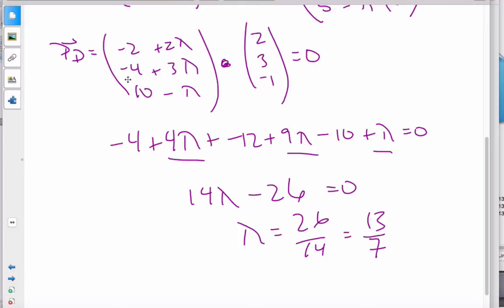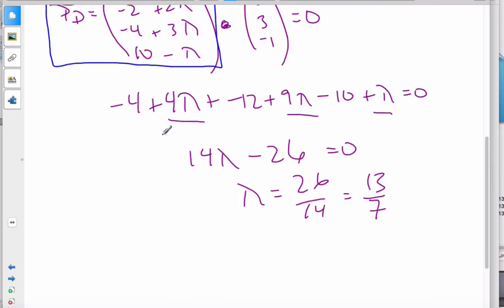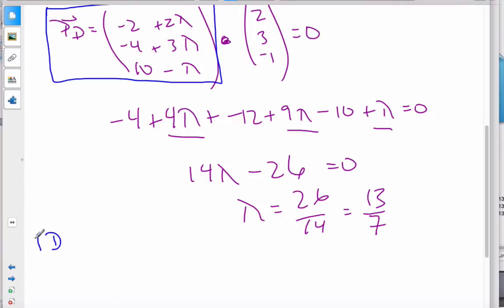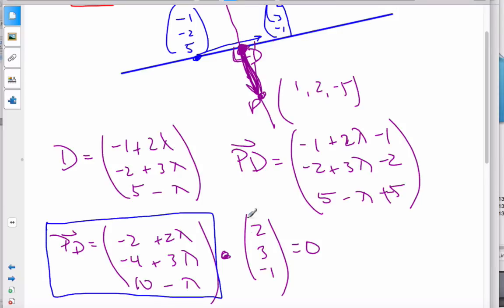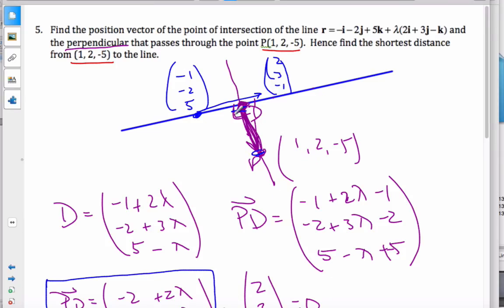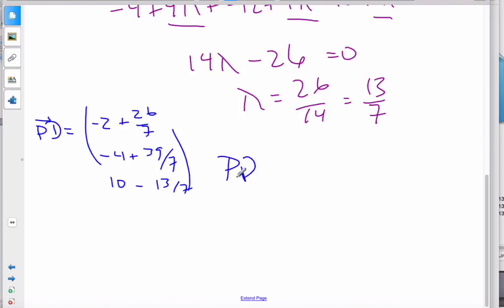I get lambda is 13/7. If I want to find the shortest distance, it's all about finding PD, which is here. So if I want to find PD, I plug in my lambda. And so PD is (-2 + 26/7, -4 + 39/7, 10 - 13/7). That's PD. And if I, hence, it says find the shortest distance, well, I want to now find the magnitude of PD.